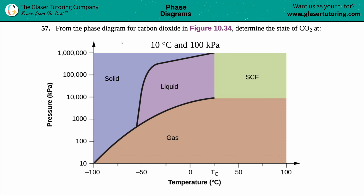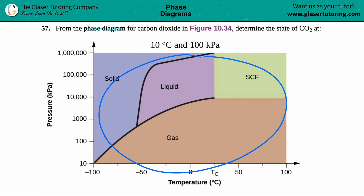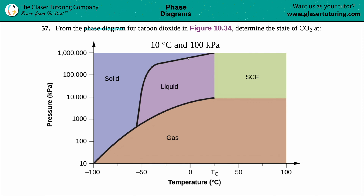Number 57. From the phase diagram for carbon dioxide, which is this phase diagram here, figure 10.34, determine the state of carbon dioxide, CO2, at 10 degrees Celsius and 100 kilopascals.